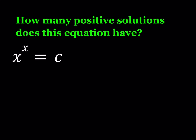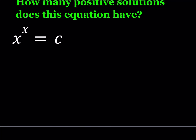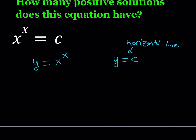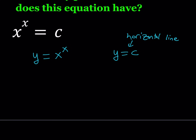Let's go ahead and take a look at two functions here. I'm going to split it up into two functions: y equals x to the power x, and y equals c. Now y equals c is going to be a horizontal line — that's a constant function, so the graph of it is going to be a horizontal line. I will also take a look at the graph of these functions.